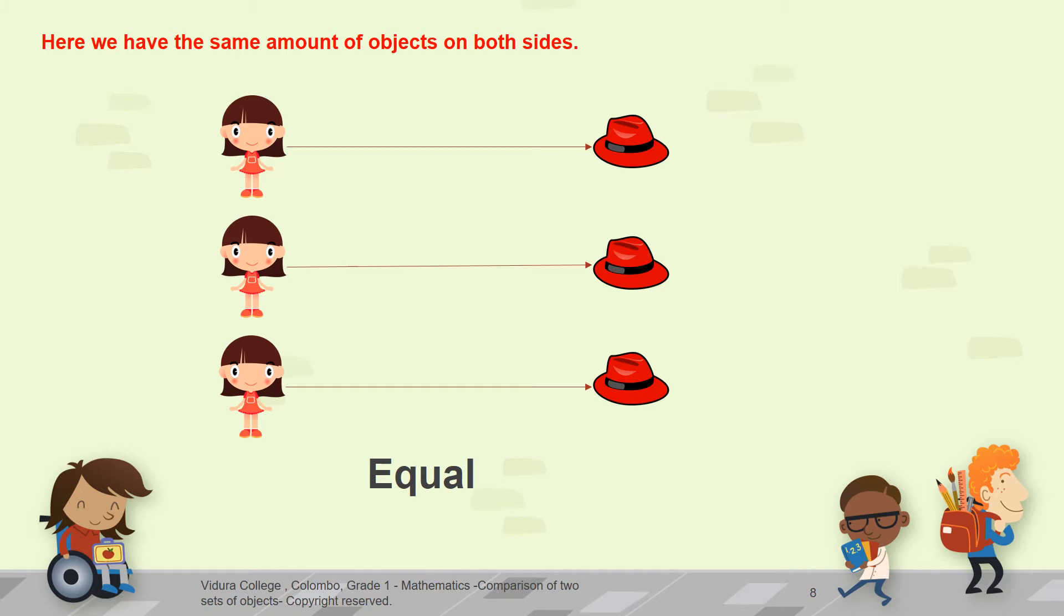Look here. These hats are enough for the girls. When at this kind of situation, we call this, as these set objects are equal to each other.